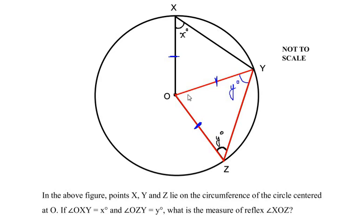Similarly, if we consider triangle OXY, this acts as an isosceles triangle because side OX is equal to side OY. So if angle OXY is x degrees, we have angle OYX as x degrees as well.